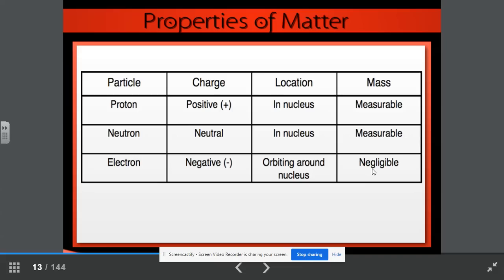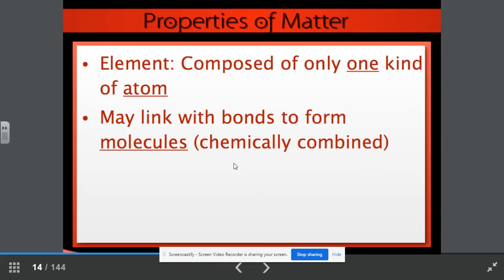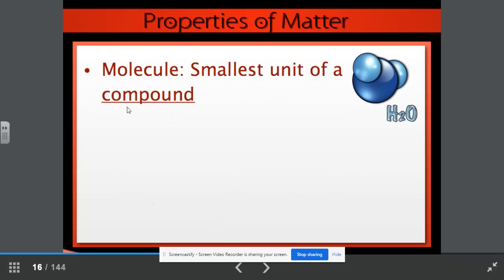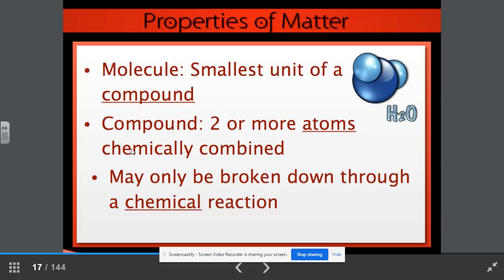An element. We know that these are composed of only one kind of atom. They may link with bonds to form molecules. That means they're chemically combined. They compose all substances on Earth, and their structure and atomic makeup determines the properties of different substances. The molecule is the smallest unit of a compound. A compound is two or more atoms chemically combined. Remember, I taught you the trick CCC. A compound is chemically combined. It may only be broken down through a chemical reaction.